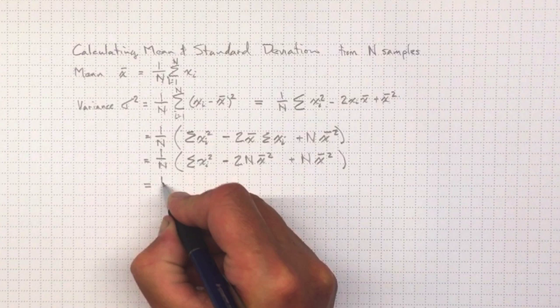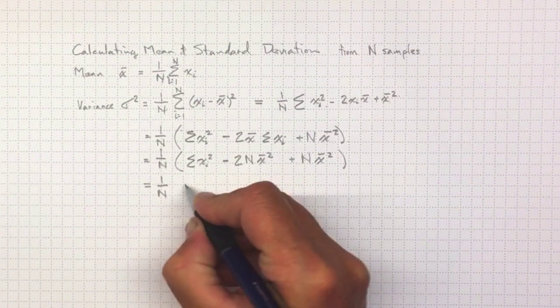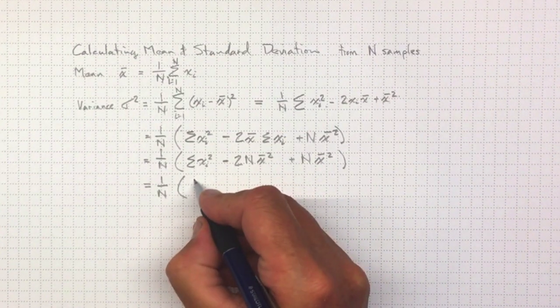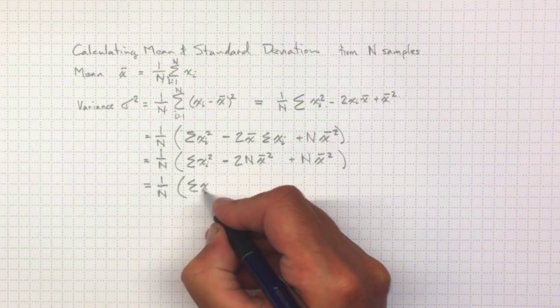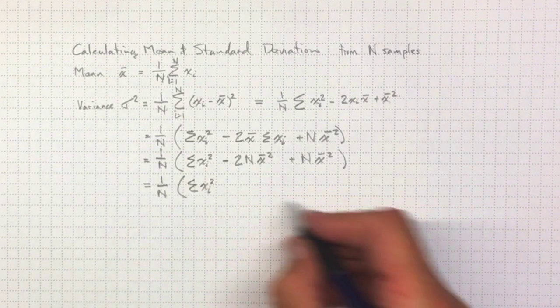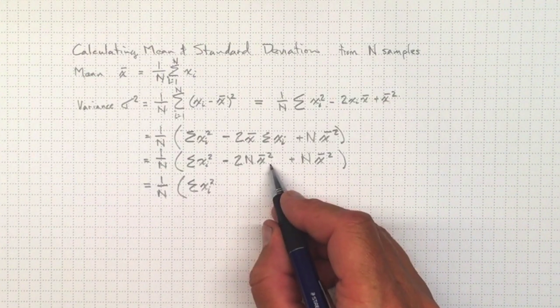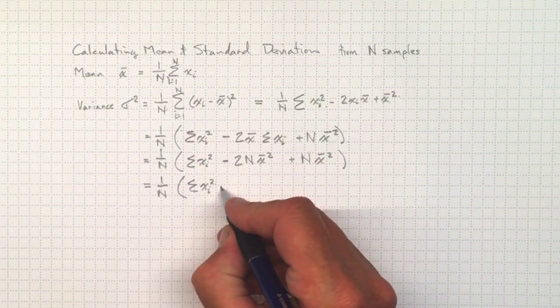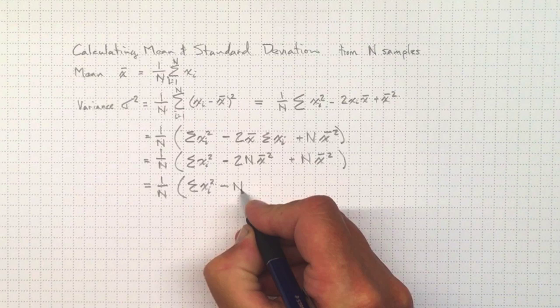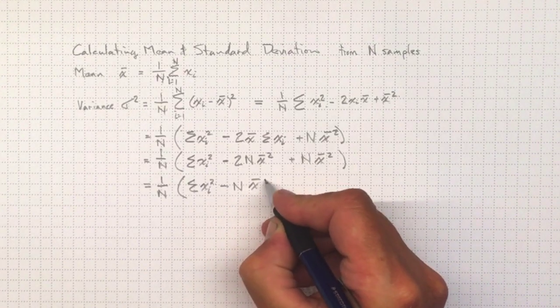Combining those, 1 over n, the sum xi². So x̄², that's going to wind up being negative n x̄² minus n x̄².